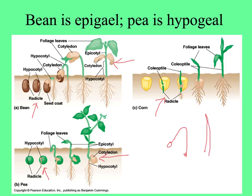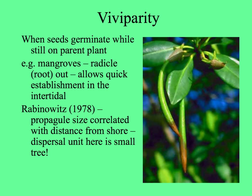Sometimes I see onion seedlings like this with a little seed coat still on the tip of the growing monocotyledon. Certain plants have their seeds germinate while still on the parent plant, and one prominent feature of our local landscape that does this is the mangrove — the red mangrove, as shown in this picture.